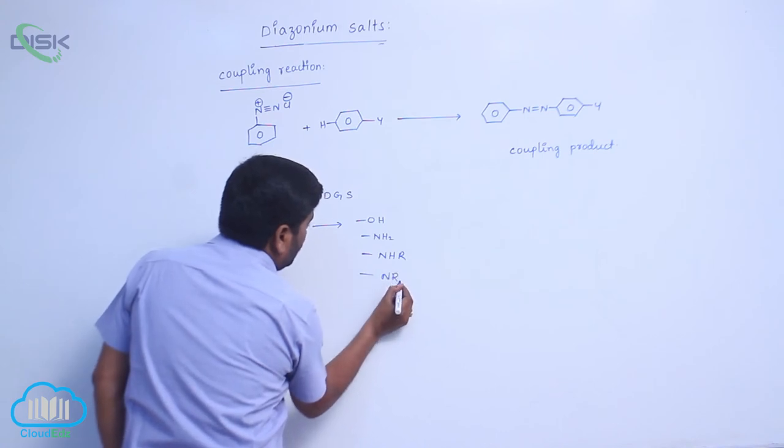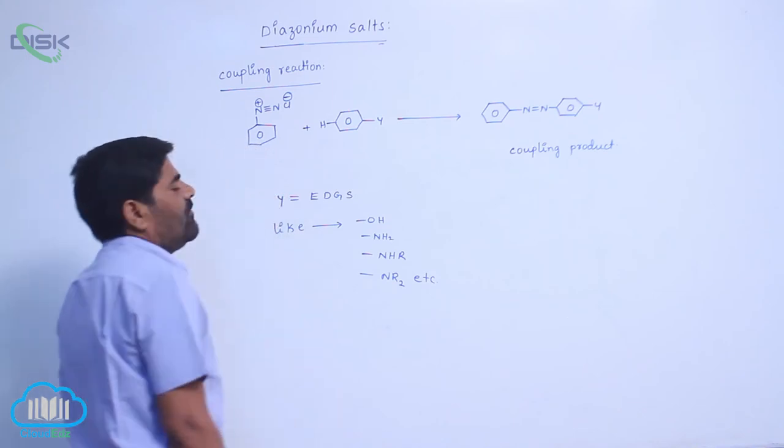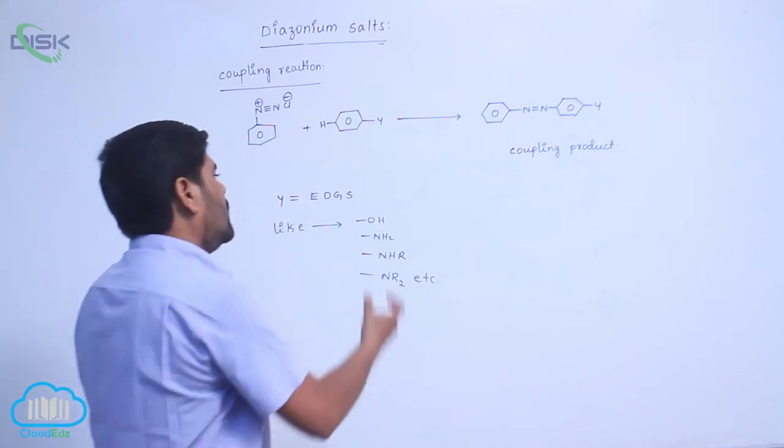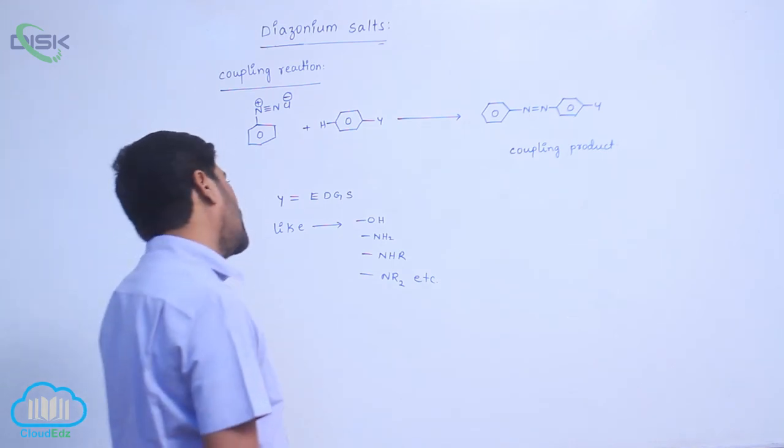These are the more favorable groups for diazonium coupling reaction.